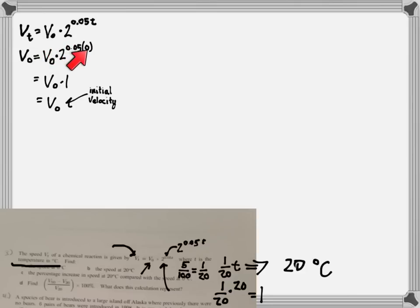So the first was, what's the speed at 0 degrees Celsius? It's kind of a weird question because we're supposed to have some given information, but we can only work with what we have. The initial temperature is at V sub 0, it's going to be 0.05 times 0 is 0, 2 to the 0 is 1, so V sub 0 represents the initial velocity.